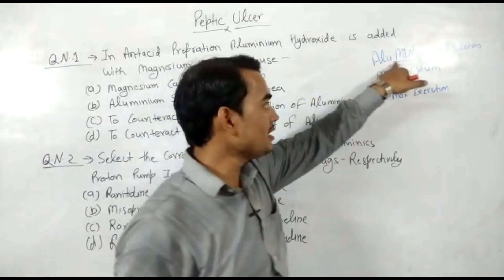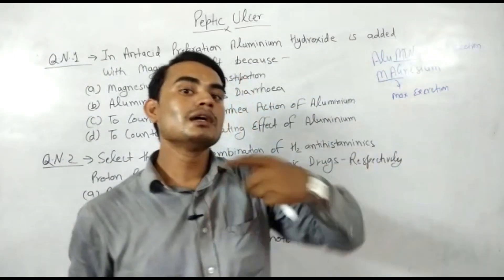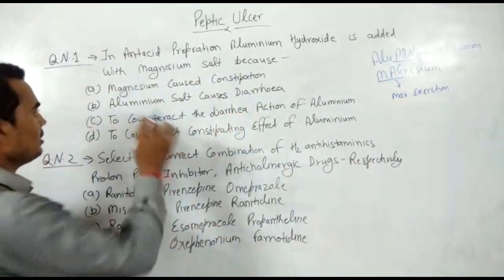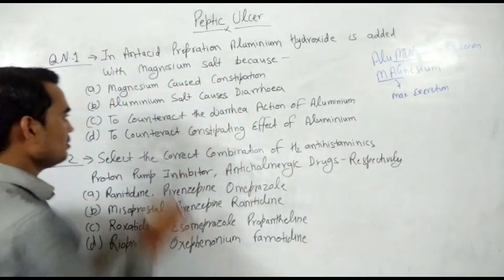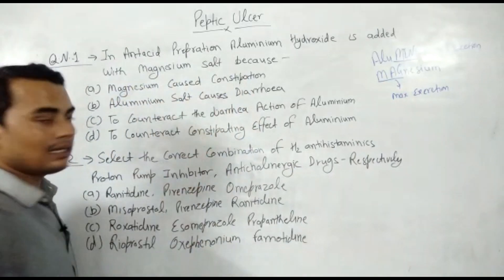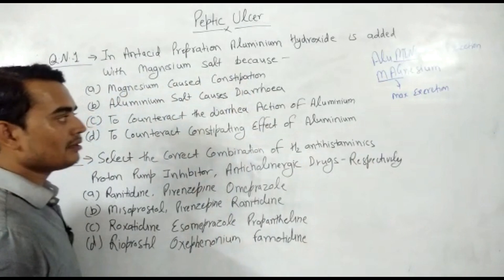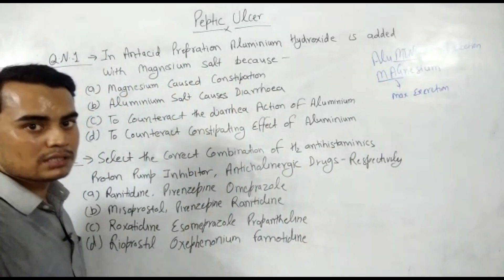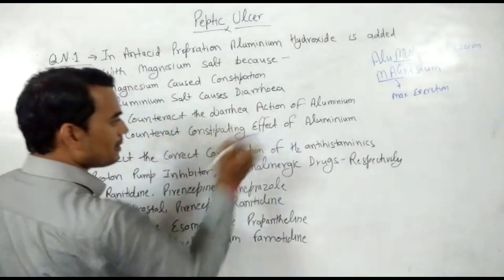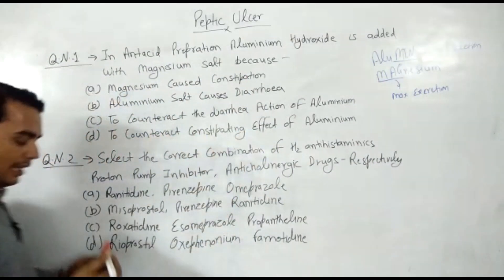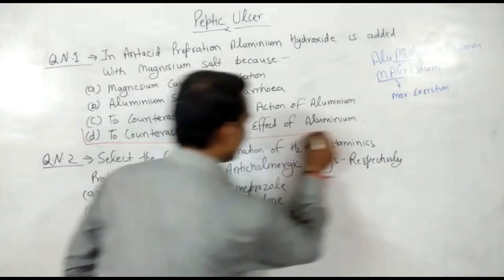Aluminium always causes constipation and magnesium always causes diarrhea. So 'magnesium causes constipation' is wrong, 'aluminium causes diarrhea' is also wrong, and 'to counteract the diarrhea action of aluminium' is wrong because aluminium causes constipation, not diarrhea. The correct answer is: to counteract the constipating effect of aluminium.